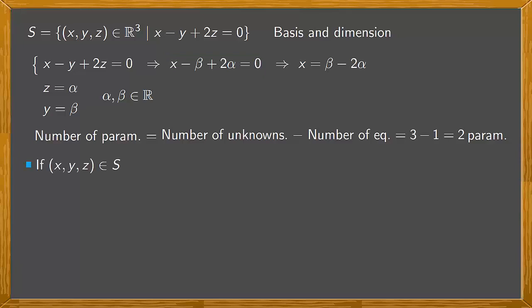Now, if (x, y, z) belongs to S, then (x, y, z) satisfies this equation. So it's a solution of the system, and its elements have this form for certain alpha and beta values.